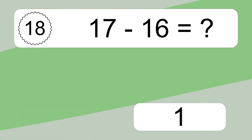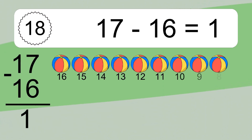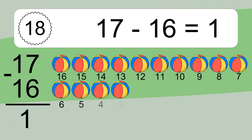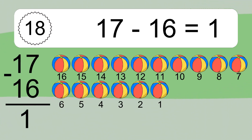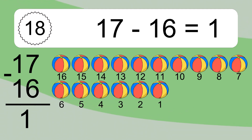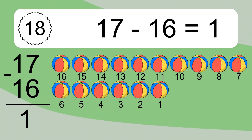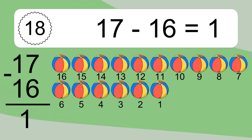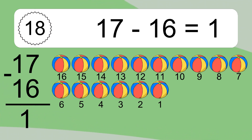17 minus 16 equals what? 17 minus 16 equals 1. Let's count it: 16, 15, 14, 13, 12, 11, 10, 9, 8, 7, 6, 5, 4, 3, 2, 1.